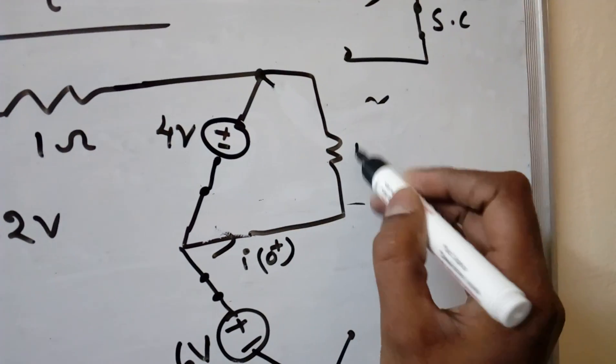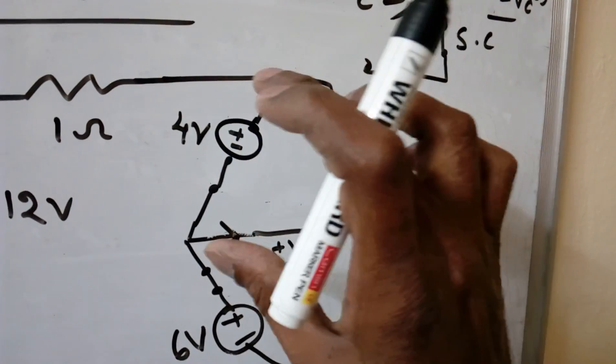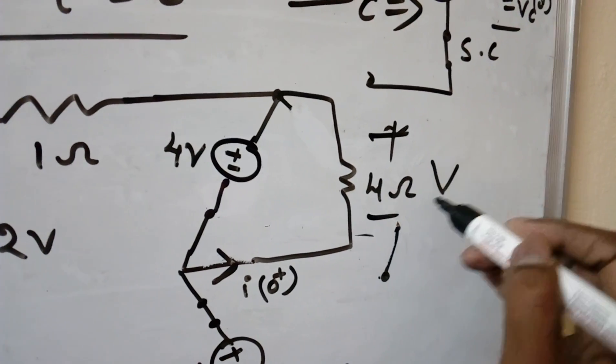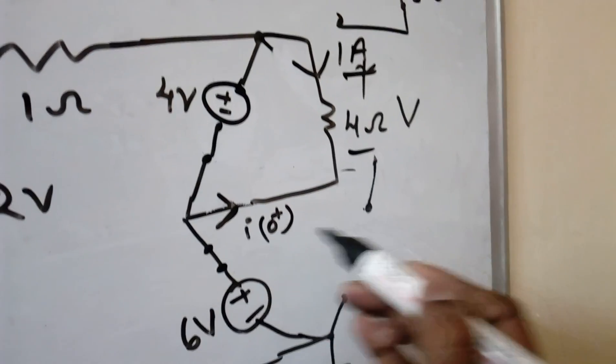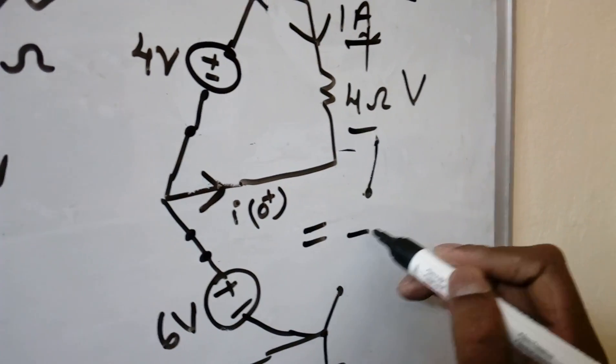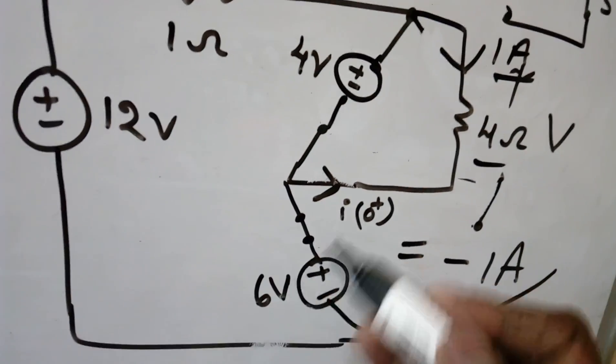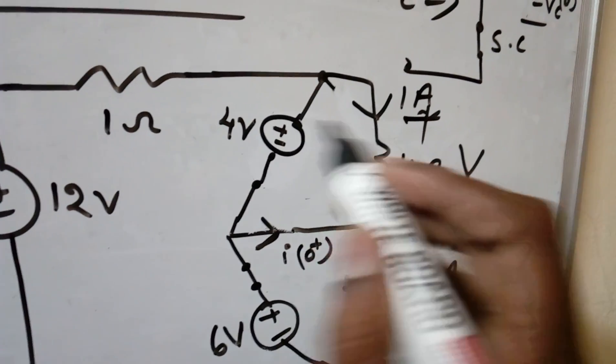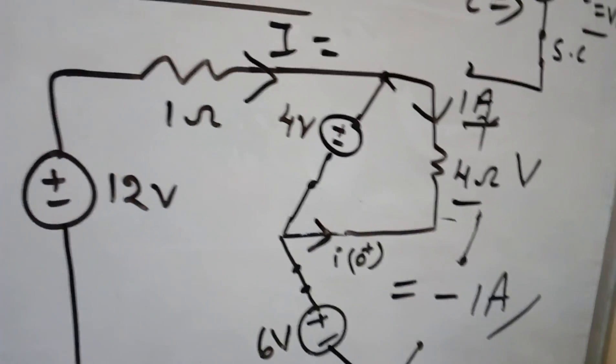Now I know this 4 ohm and across the 4 ohm resistance there is 4 volts. What is this current? I know voltage and I know resistance. The current is nothing but 1 ampere. 1 ampere is coming like this. But he asked opposite direction. So I(0+) is nothing but minus 1 ampere. If they ask here then also we can find easily. How? We will see. See this is 1 ampere is coming. And if I know this current then I can get easily what are the different currents also. This is extension.